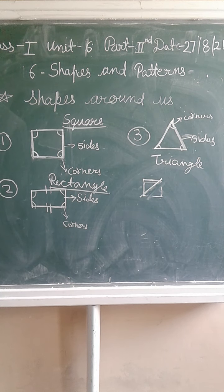Fifth shape — Oval. Oval shape is just like an egg. It is a stretched circular shape.